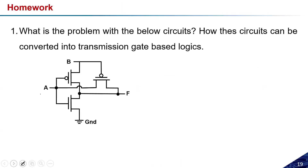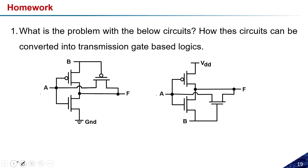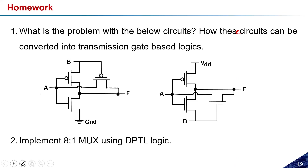Homework assignments: first, find the problem with the previously studied circuits and show how they can be converted to transmission gate logic. Second, implement an 8-to-1 multiplexer using differential pass transistor logic. Third, based on the 2-to-1 MUX implemented with pass transistor logic, implement all logic gates — AND, OR, NAND, NOR, XNOR. This concludes the lecture on transmission gate logic.